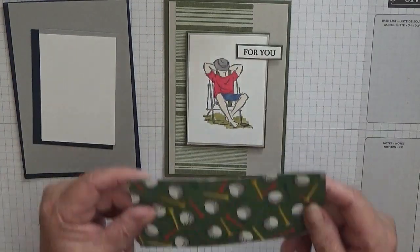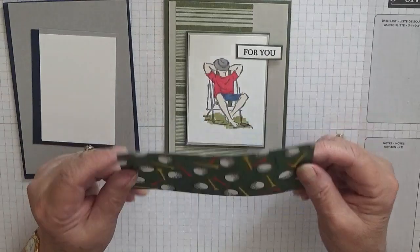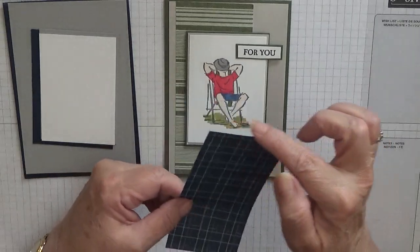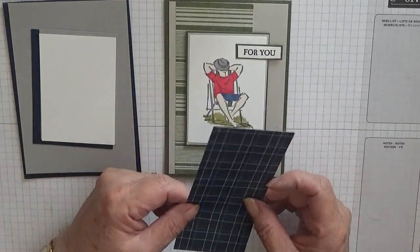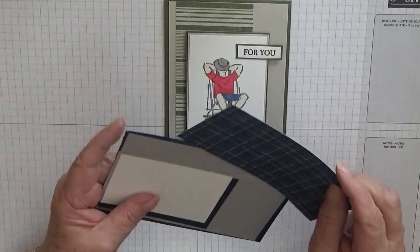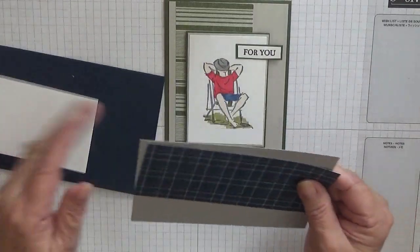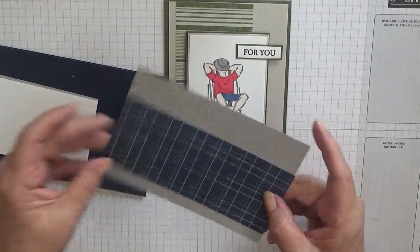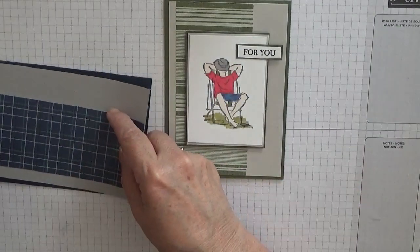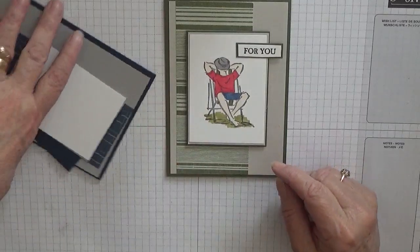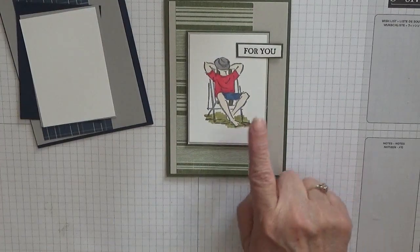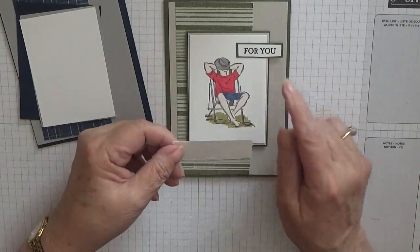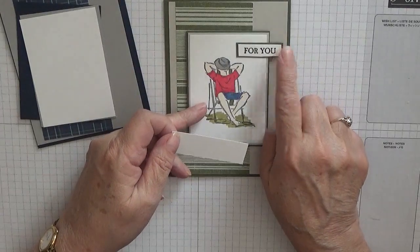A piece of Smoky Slate at two and five eighths by three and five eighths, and a piece of white at two and a half by three and a half. I've also got a piece of DSP from the clubhouse that measures two and a half by five and five eighths, and some scraps for the 'for you' sentiment.